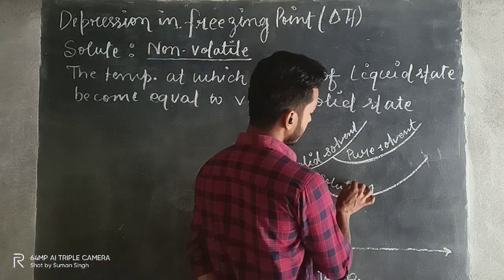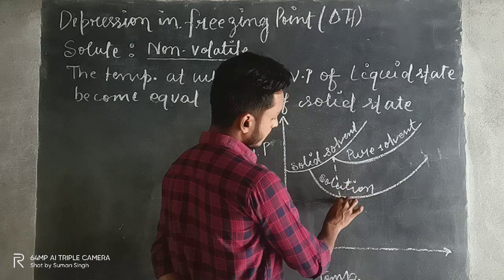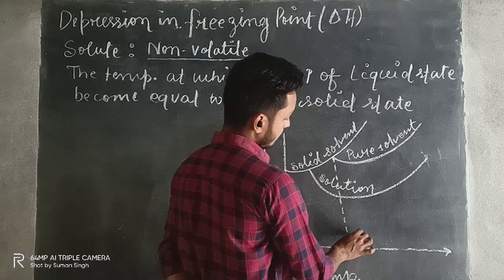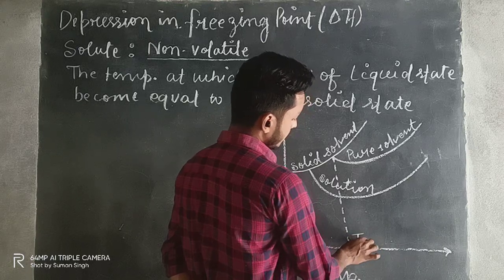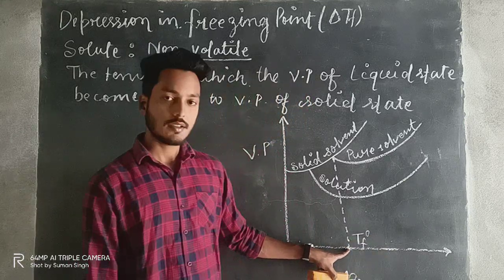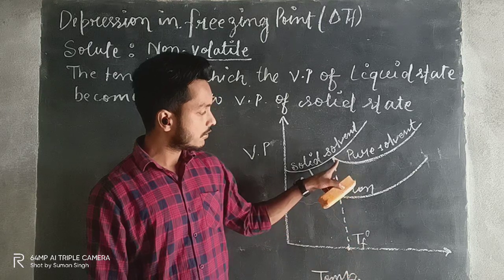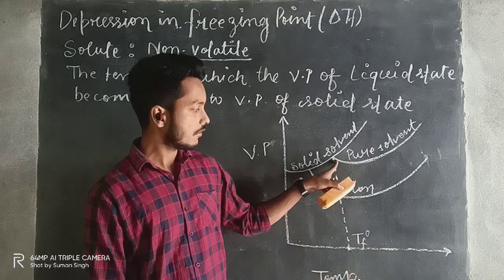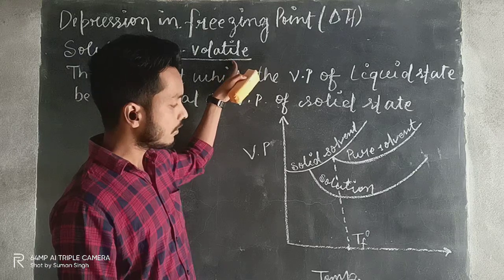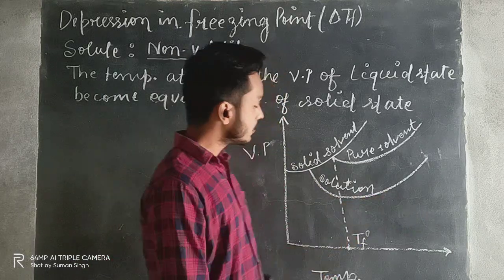Now if you will notice here, you will find that this temperature — this one — is the temperature of the pure solvent. It is denoted by T naught F. This is the temperature at which the pure solvent used to freeze. Now what will happen when we have added a non-volatile solute? The freezing point will decrease.